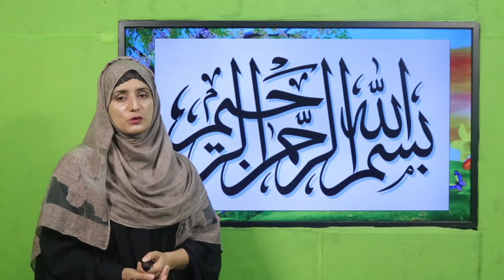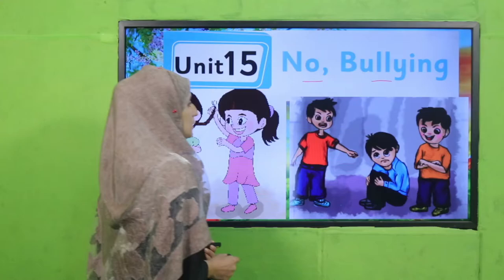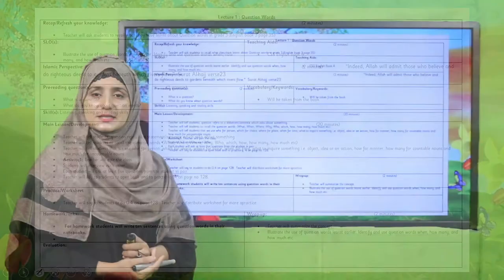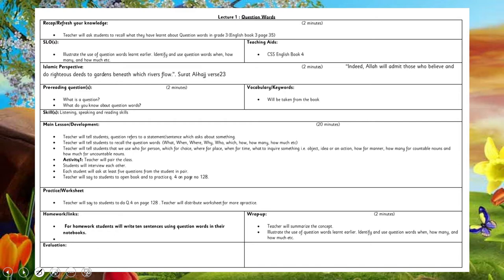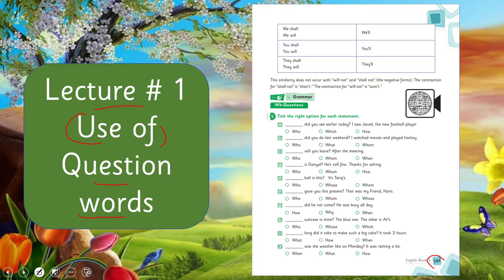Bismillahirrahmanirrahim, Assalamu Alaikum, my dear students! How are you feeling today? I welcome you to my class — English for Grade 5. We are learning Unit number 15: No Bullying. My dear fellow teachers, this lesson plan, PowerPoint presentation, and worksheet links are given below. You may click, download, and amend them for your ease. I am going to deliver my lecture according to this lesson plan.